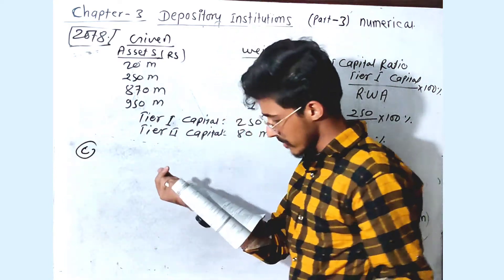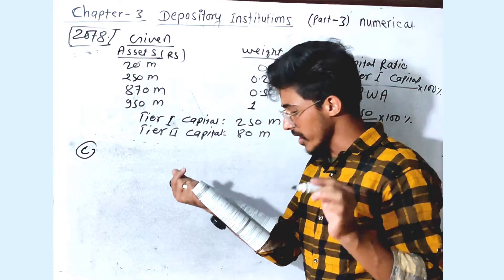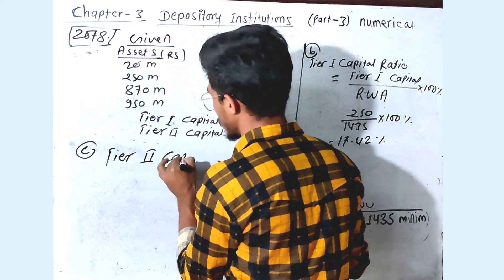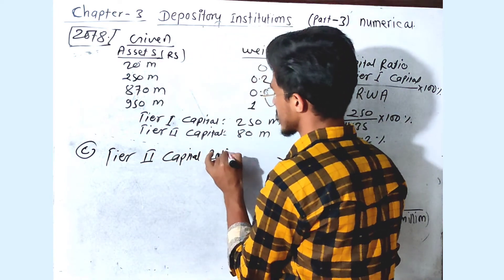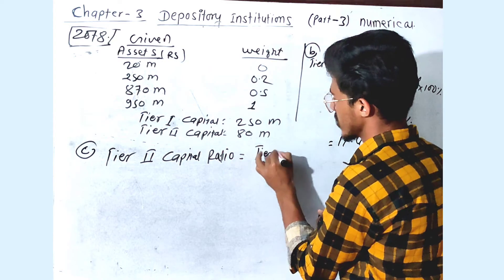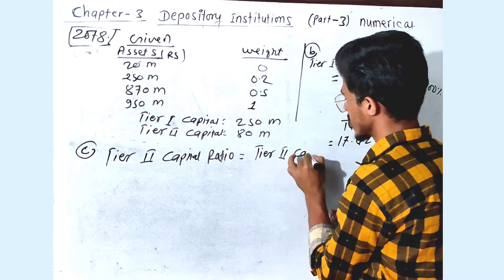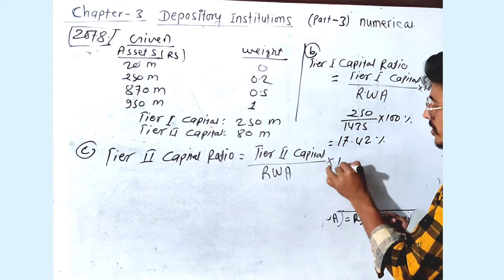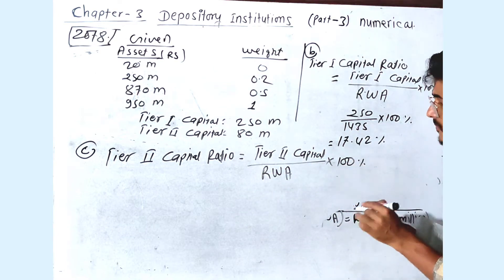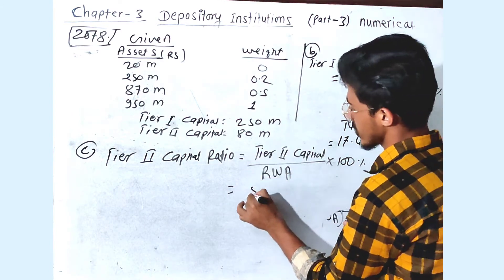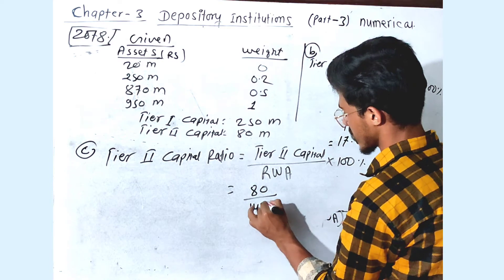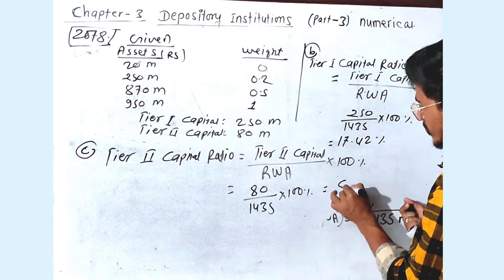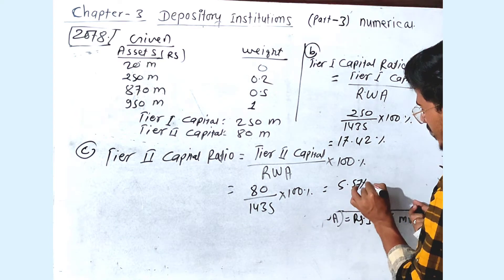Now we have C number. What is the Tier 2 capital ratio? Tier 2 capital ratio equals Tier 2 capital divided by total risk-weighted assets, multiplied by 100%. This means Tier 2 capital is 80 divided by 1435 (or approximately 36.3 per the video), into 100%, which gives approximately 5.57%.